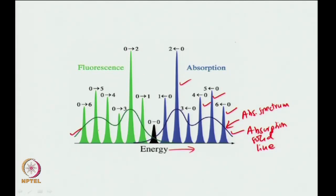I will discuss this later, but just to let you know, because we have this picture in front of us: the mirror image rule arises because whatever vibrational levels are involved in absorption, the same vibrational levels are involved in fluorescence. In most cases, especially where molecules are very rigid and there is not too much change in the equilibrium bond length, this mirror image symmetry is typically maintained.